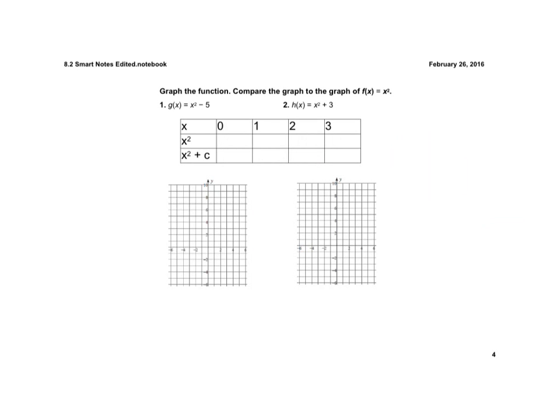Just a few more examples here. So if we graph G of X, we have X squared minus 5. I plug 0 in for X. 0 squared minus 5 is a negative 5. 1 squared is 1. 1 minus 5 is a negative 4. 2 squared is 4. 4 minus 5 is a negative 1. 3 squared is 9. And 9 minus 5 is 4.